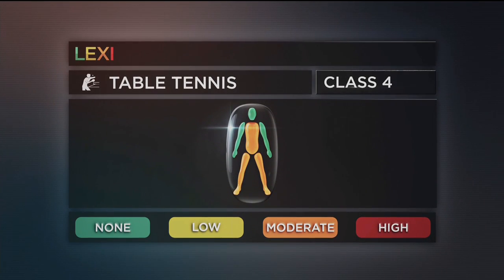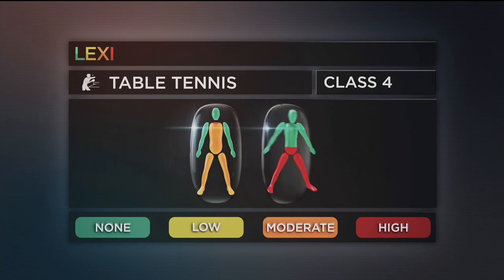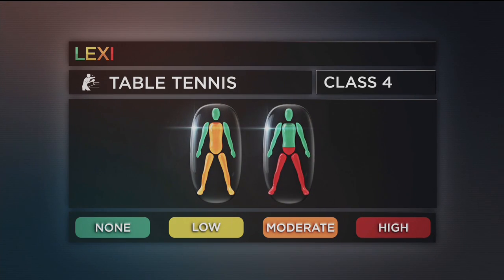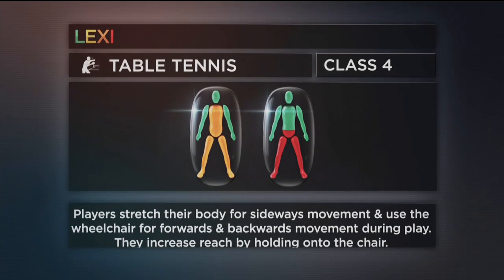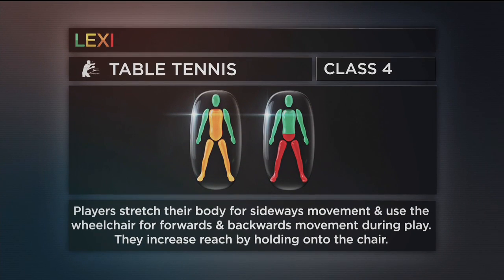Class 4 is for wheelchair players with a moderate impairment affecting the trunk and legs, or a high degree of impairment affecting the lower trunk and legs. Players stretch their body for sideways movement and use the wheelchair for forward and backwards movement during play. They increase reach by holding onto the chair.